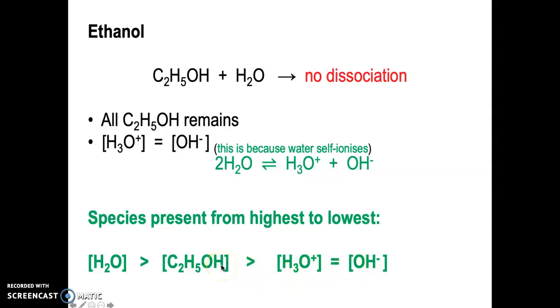They'll be much smaller than the ethanol, but they are equal. So you've only got four species present: water and the ions associated with the self-ionization of water. Those three are always present in every aqueous solution. In this instance, you'll also have the ethanol.